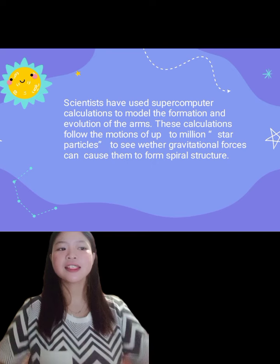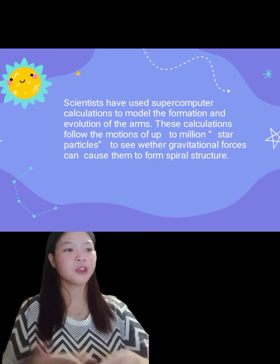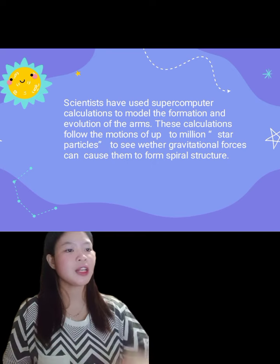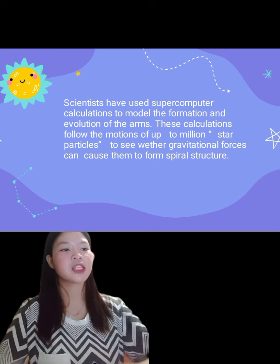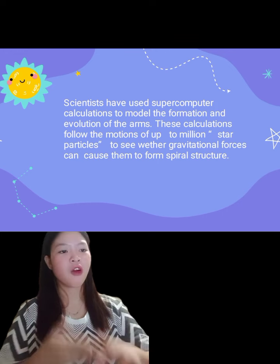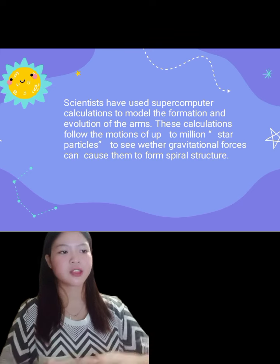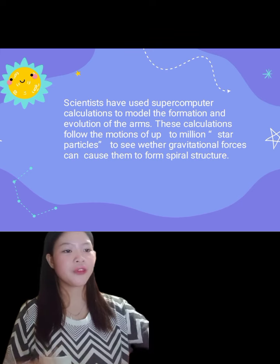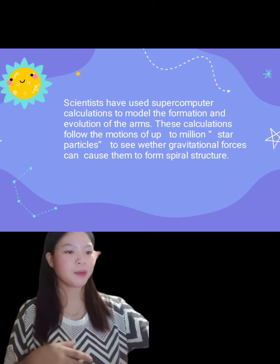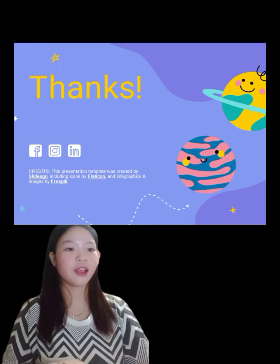Scientists have used supercomputer calculations to model the formation and evolution of the arms. These calculations follow the motions of up to a million star particles to see whether gravitational forces can cause them to form spiral structure. And that's all — thank you.